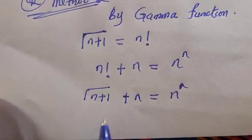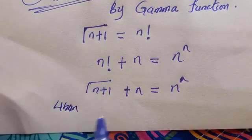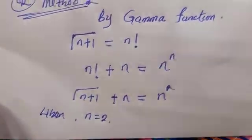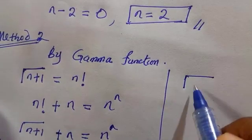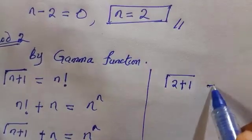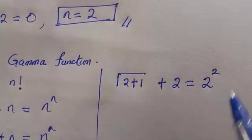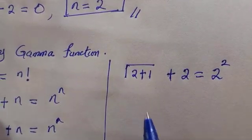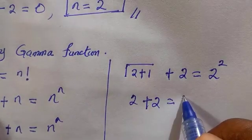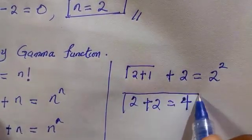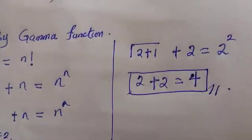We assume n equals 2 and substitute: gamma(2 plus 1) plus 2 equals 2 squared. Gamma(3) equals 2 factorial equals 2, so 2 plus 2 equals 4, which equals 2 squared. This confirms the result: n equals 2.